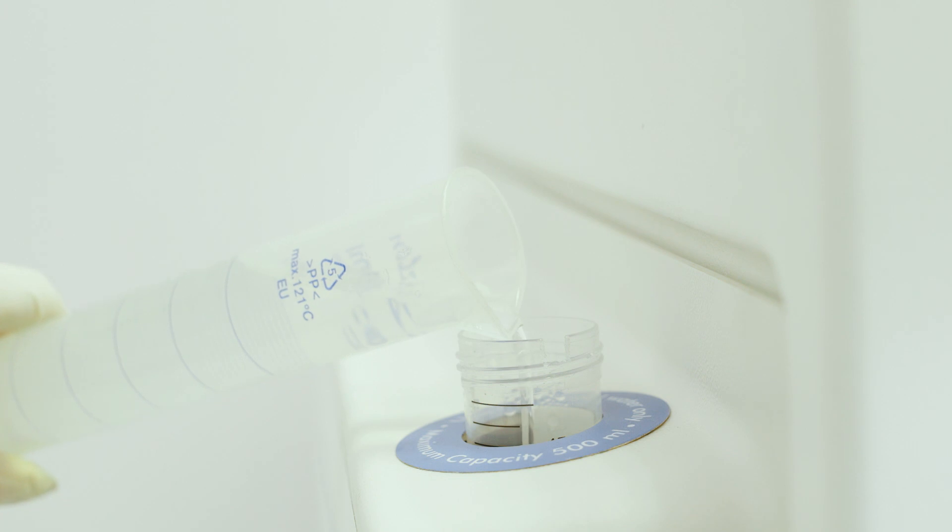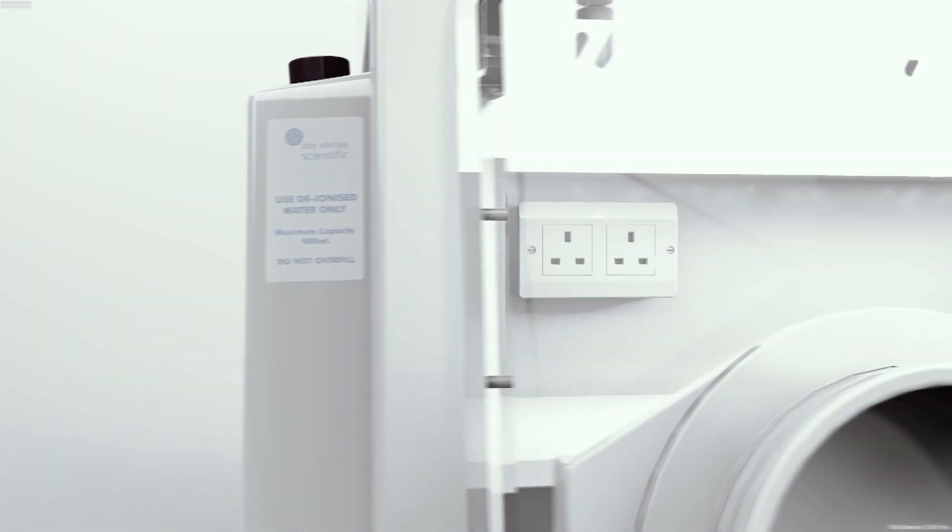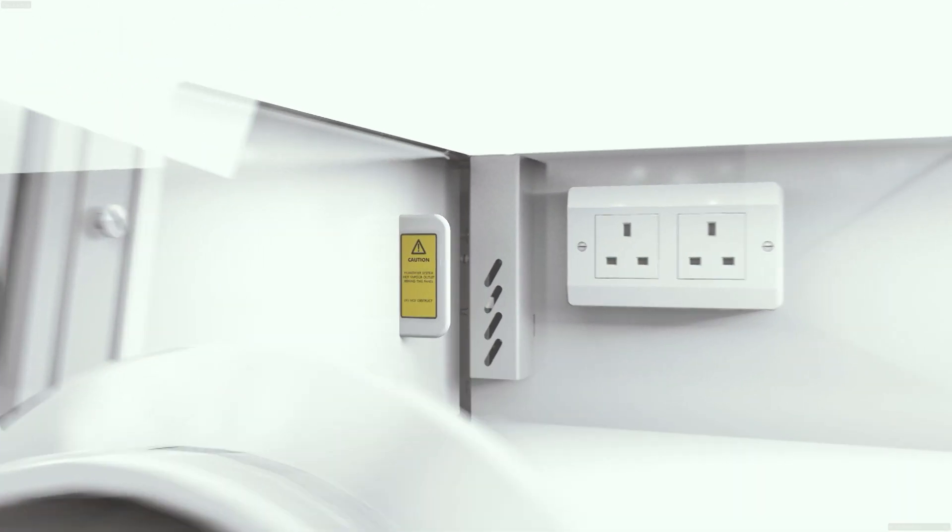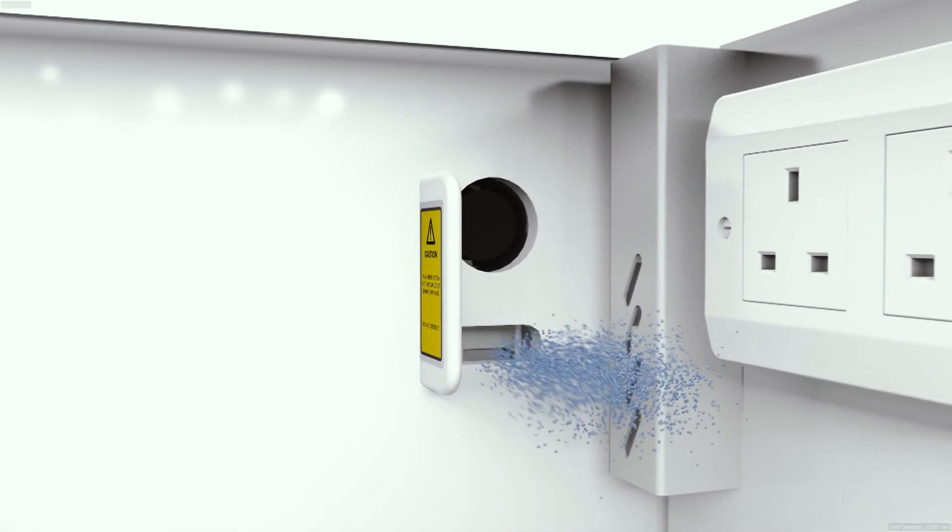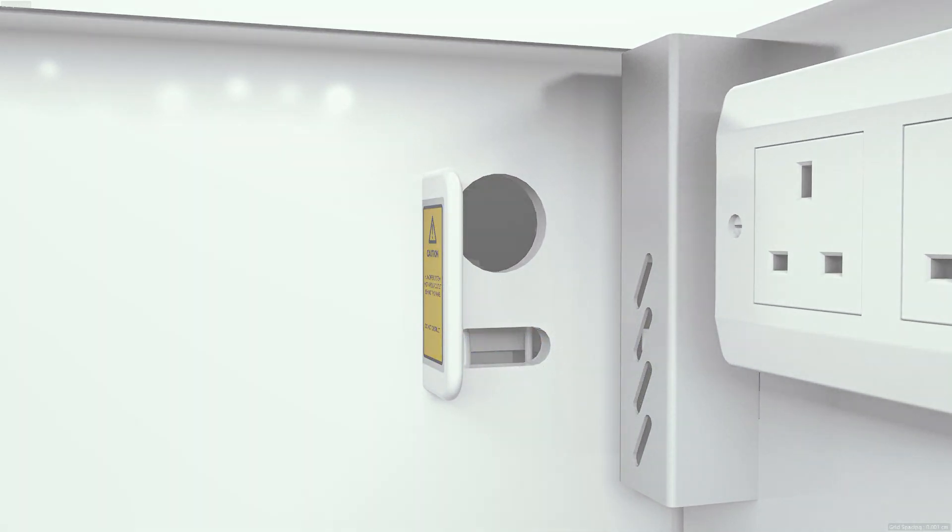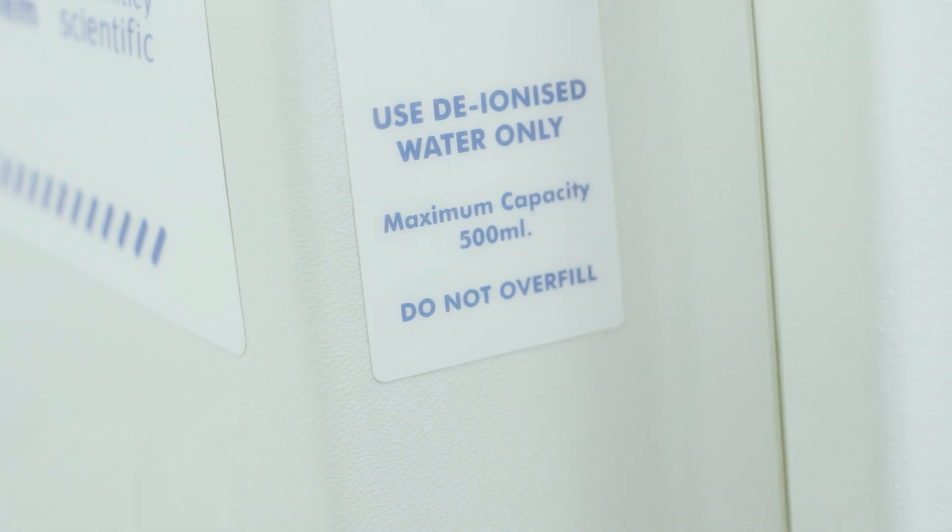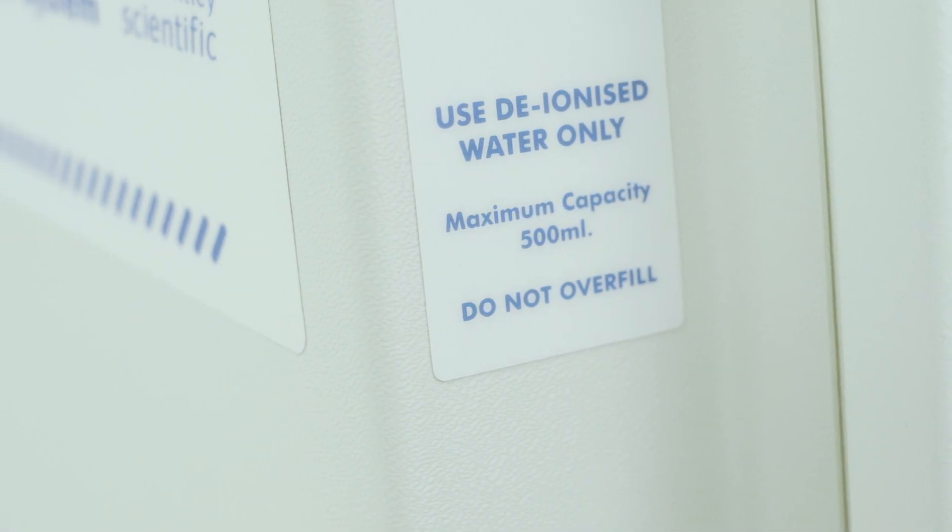The automatic humidification system adds sterile water vapour to increase humidity. Some Helicobacter and Campylobacter species require particularly high humidity levels to grow well on agar plates. Maintenance-free dehumidification is also fitted to remove excess humidity.